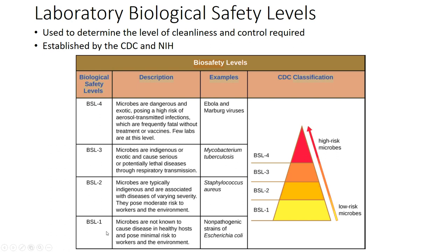The BSL scale goes from level one to level four. Level one is going to be the level where we have our non-pathogenic strains — microbes that don't really cause disease under normal conditions. They're of minimal risk. When you move into biological safety level two, this is where you get to microbes that can cause disease and sometimes the disease can be severe, but these are diseases where you have to be in a certain environment for them to be of harm to you. At this point we really just have to be aware of what we're working with.